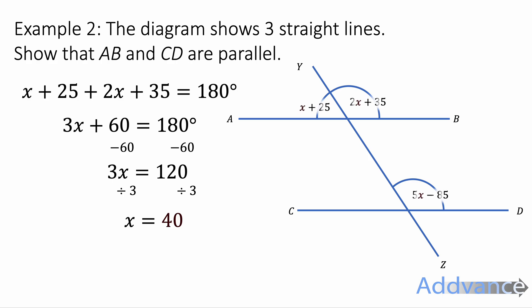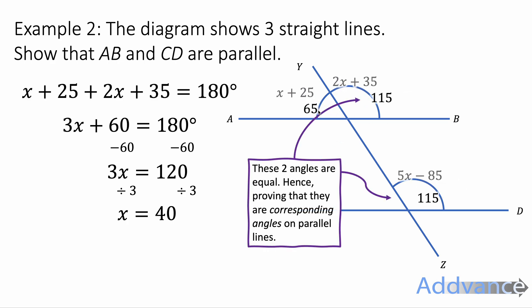We know what x is now and can substitute it into the original equations. Like this. We can evaluate these. If you calculate the exact size of these angles using that algebra, we get that this angle is 65. This is 115. And this is 115.